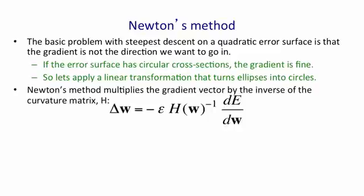To do this, we need to multiply the gradient, dE by dW, by the inverse of the curvature matrix. So H is the curvature matrix, sometimes called the Hessian. It's a function of the weights we have. And we need to take its inverse and multiply the gradient by that. Then we need to go some distance in that direction.